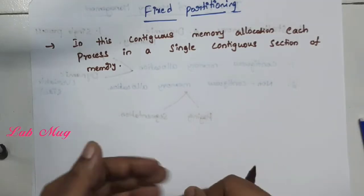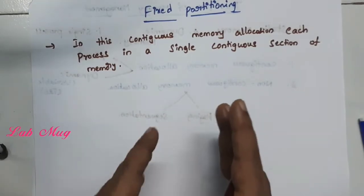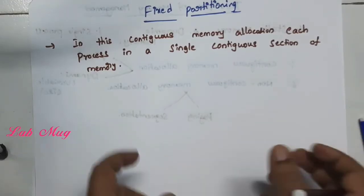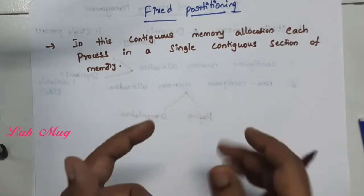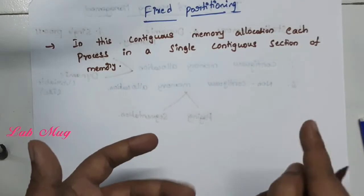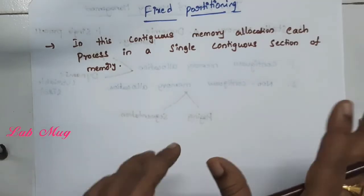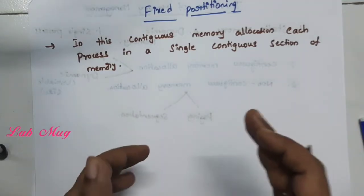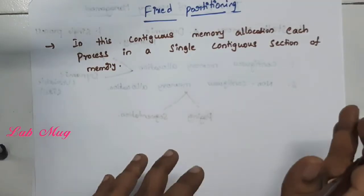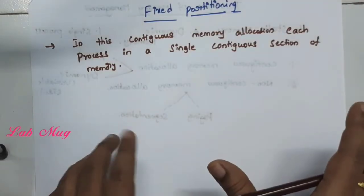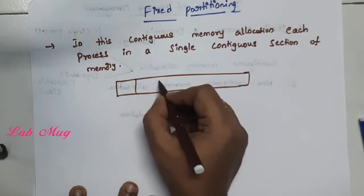We can access multiple processes. I have 20MB free memory. That 20MB free memory is allocated to multiple processes. For example, Process 1 needs 4MB, Process 2 needs only 3MB, Process 3 needs only 4MB. The total available memory is continuously allocated as partitions to each and every process. That is continuous memory allocation — allocated in only one section.